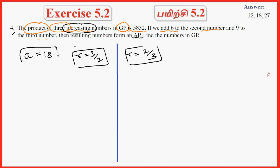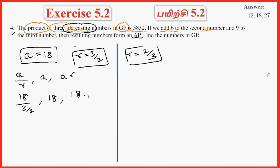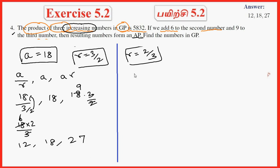Now we have A and R. The terms A/R, A, and AR with A = 18 and R = 3/2 give: 18 ÷ (3/2) = 12, 18, and 18 × (3/2) = 27. So the three terms are 12, 18, and 27.